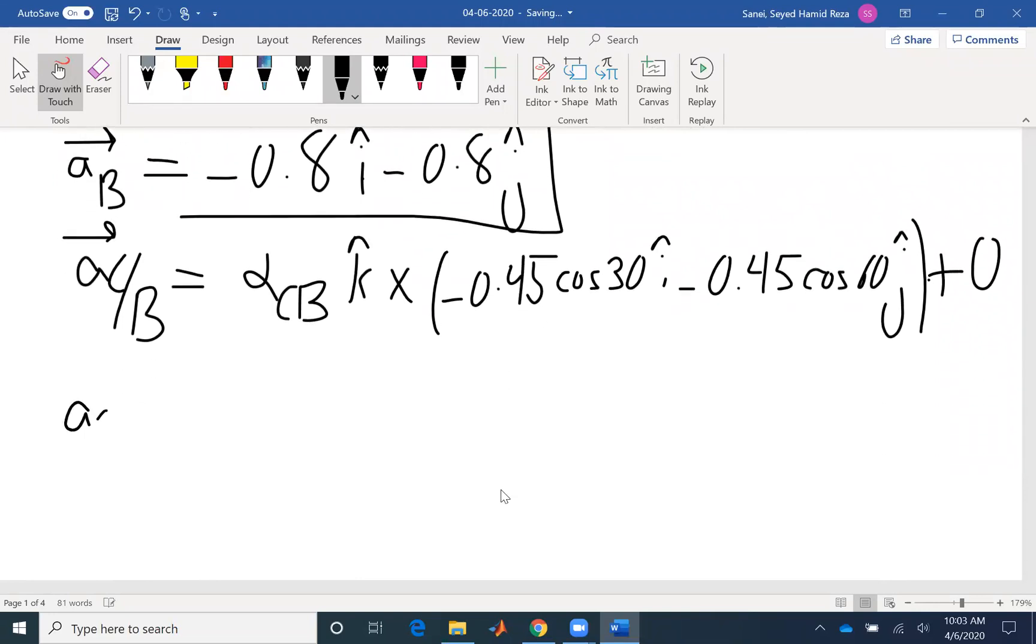If I expand that, K cross i would be positive j, but I already have a negative here. Cosine 30 is square root of 3 over 2. So if I rearrange, that would be 0.225 square root of 3 alpha CB j. K cross j creates a negative value, I already have a negative here, so that would be positive. Cosine 60 would be half, so half of 0.45 would be 0.225 alpha CB i. So I found the third vector.